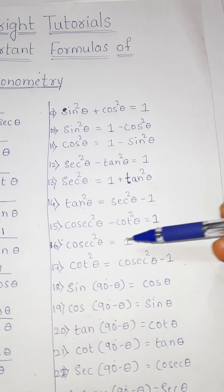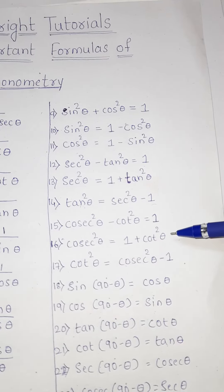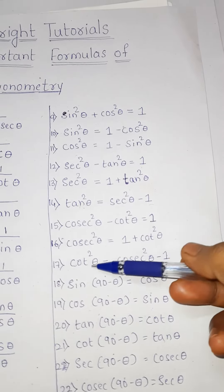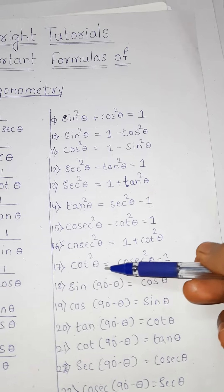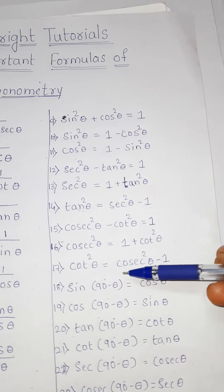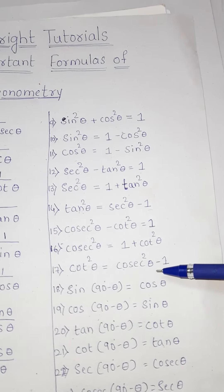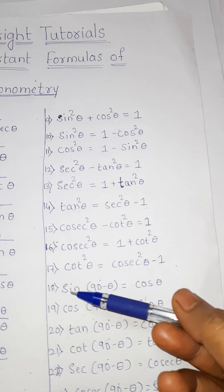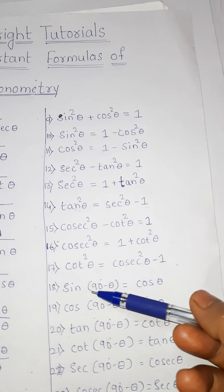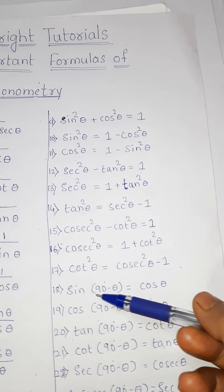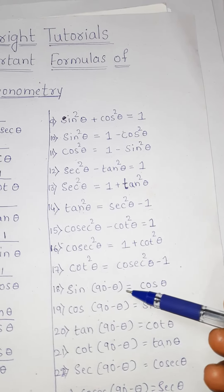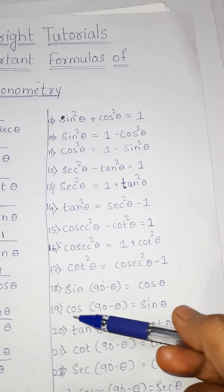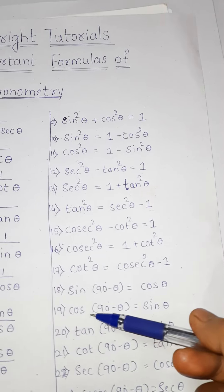Sixteenth one: cosec square theta is equal to 1 plus cot square theta. Seventeenth one: cot square theta is equal to cosec square theta minus 1. Eighteenth one: sin(90 degree minus theta) is equal to cos theta.